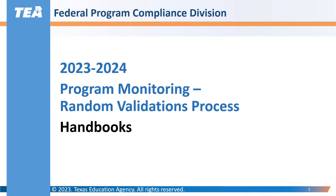In this section of the training, we will be looking at the Program Monitoring Random Validations Process Handbooks. There is one handbook per program, per program requirement, that LEAs can use as they assemble their documentation in preparation for submitting it for review to the Texas Education Agency Federal Program Compliance Division.